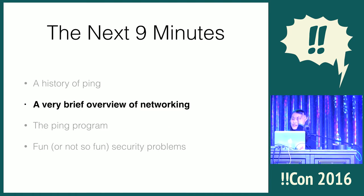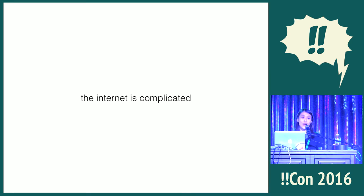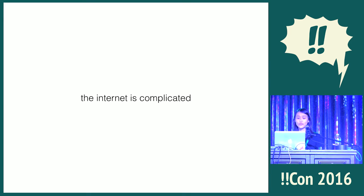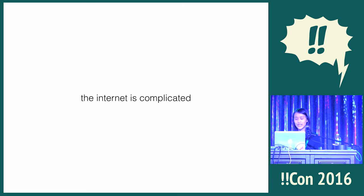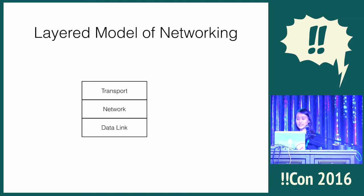Let's start with a very brief overview of networking. The internet is complicated — it's a massive network of computers connected to each other in different ways, such as ethernet, wifi, or an underwater cable. These connections can also be lossy; for example, when there's a lot of traffic, not everybody's data can get through. To handle this complexity, we use abstraction, specifically organizing it into layers, where each layer has a specific function and doesn't worry about the implementation of the other layers.